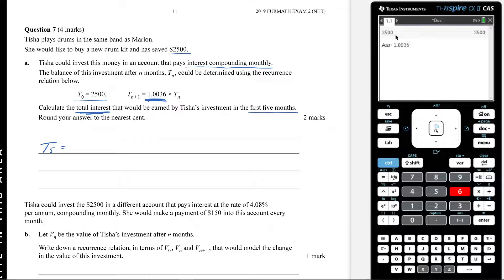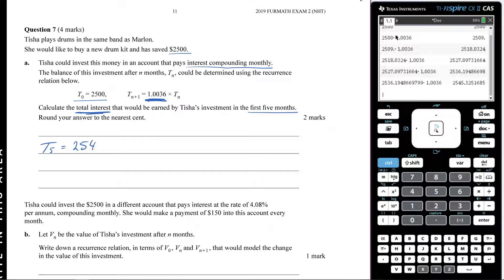And that now is going to tell you that in the first month you're going to have that much money, second month, third month, fourth month, fifth month. So that means T5 is going to be $2,545.33 when I rounded to the nearest cent there.